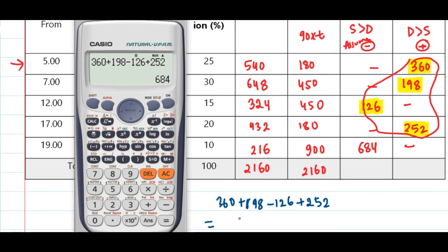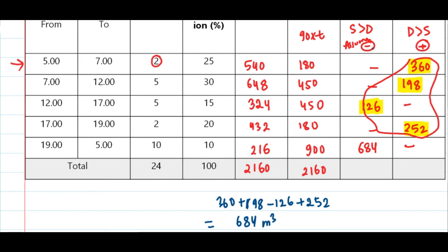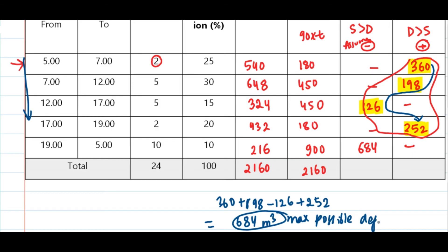You cannot skip intermediate values — you must take consecutive values. If the subtraction from a surplus is more than the addition from a deficit, we would exclude that period; but here subtraction is less than addition, so we include the 126 surplus and 252 deficit. The maximum possible deficit is 684, so the capacity of the balancing reservoir is 684 meter cube.